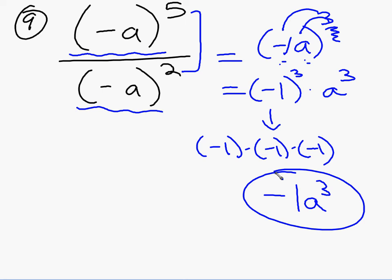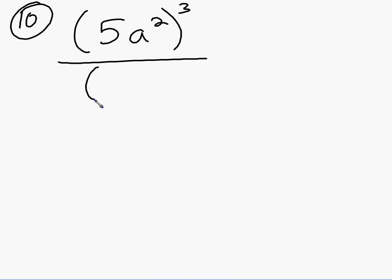We do have one problem that I forgot to go over. We need to go over one more. That's a problem where we also have to distribute, like this: 5a to the second to the third over 5a to the third to the second. If you'll notice on this problem, if you look inside parentheses, they're not the same, are they? The one on top is 5a to the second. The one on bottom is 5a to the third. So I can't just subtract this 3 and this 2 because what's on the inside is not the same.